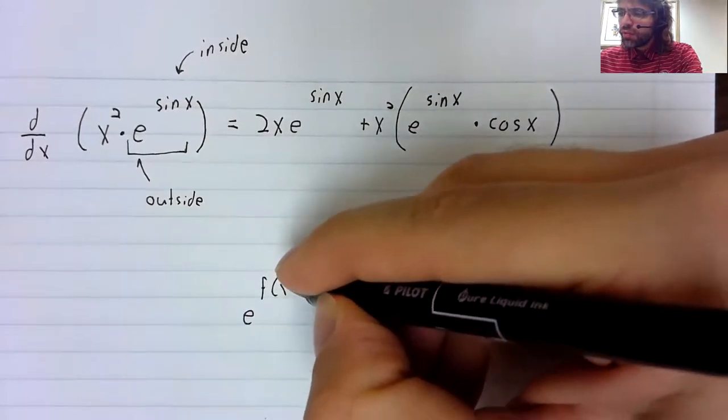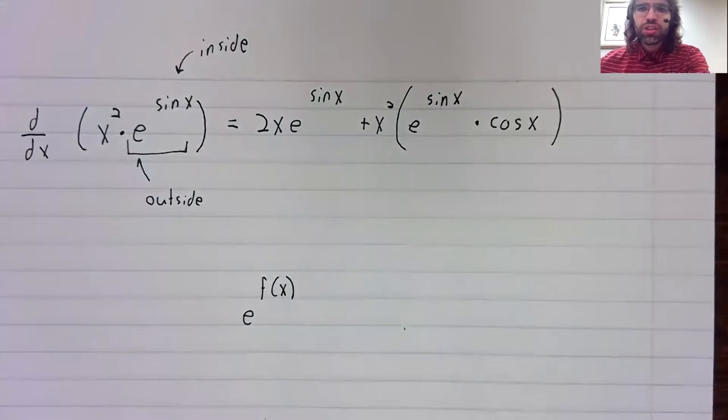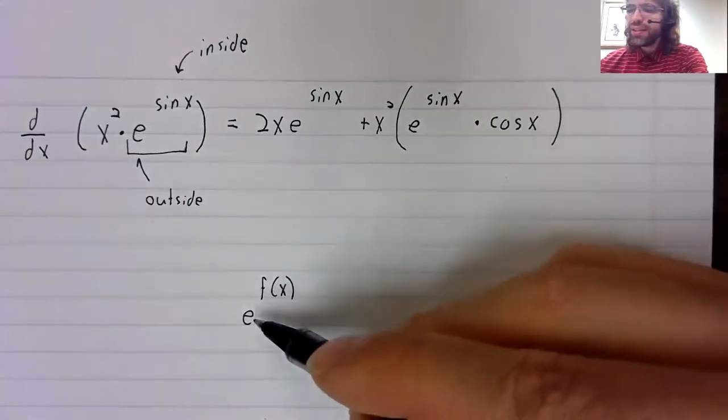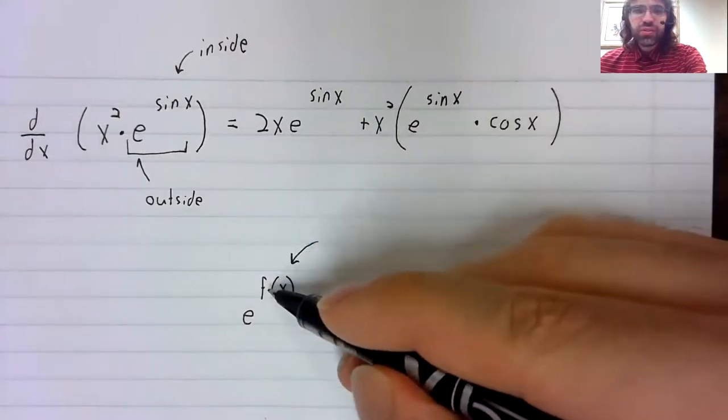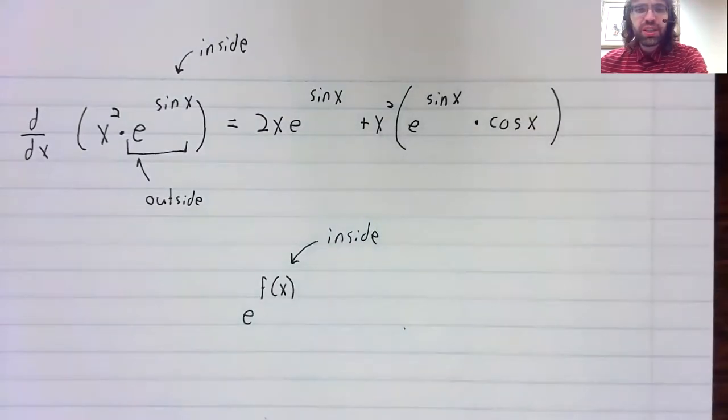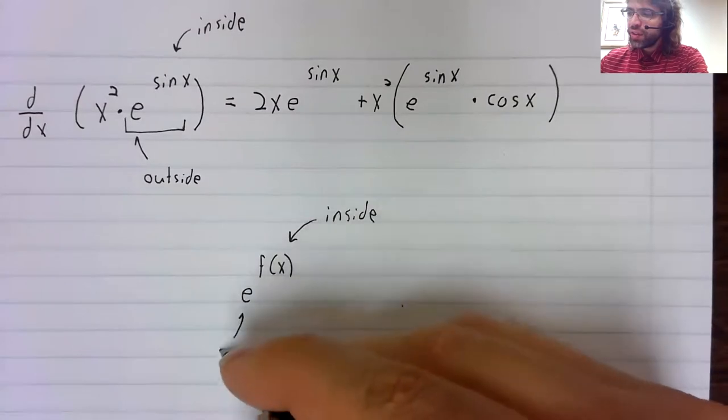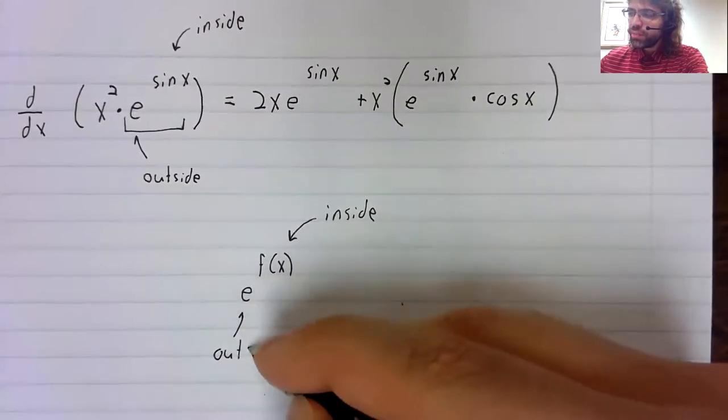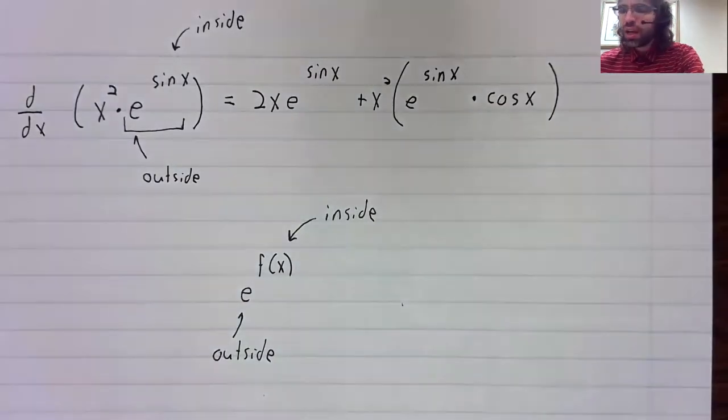So if you ever, which you will, want to differentiate e to a function, this function is always going to be inside. This function is always going to be outside.